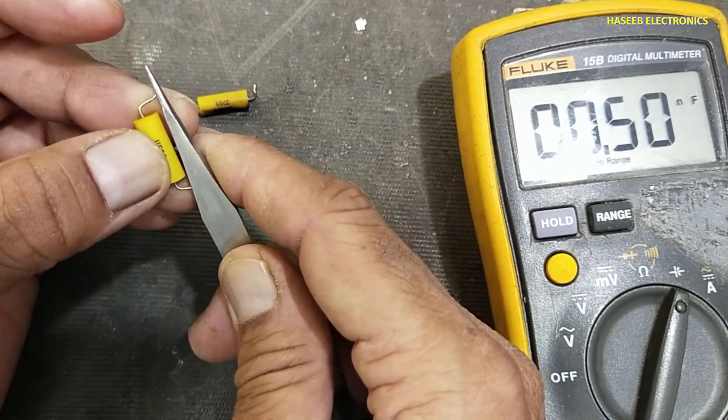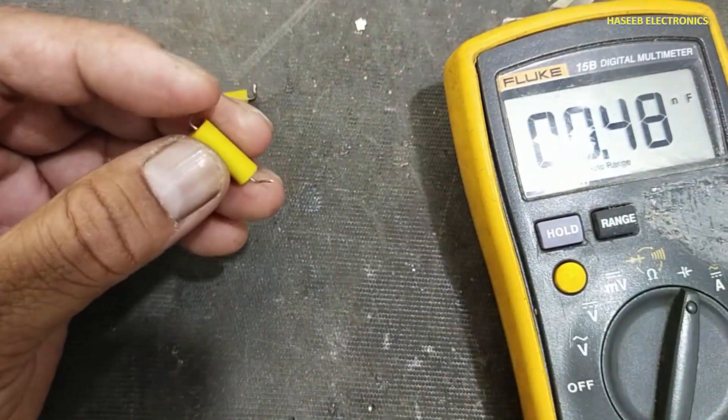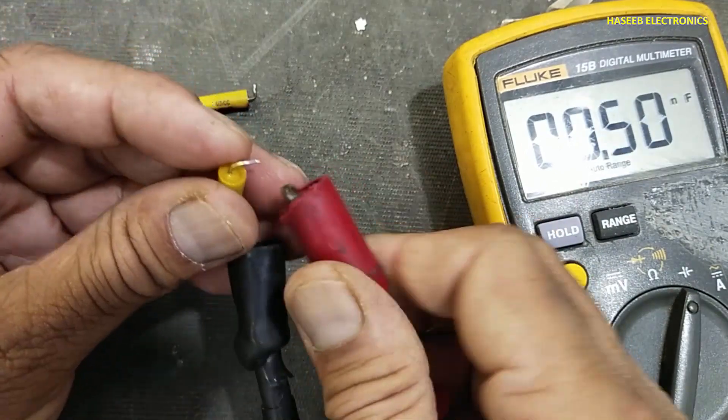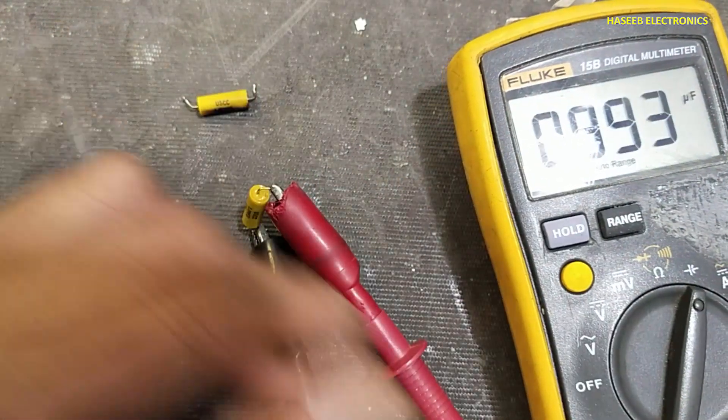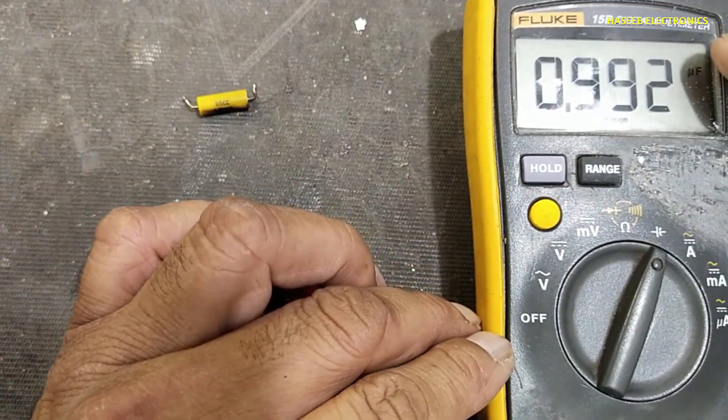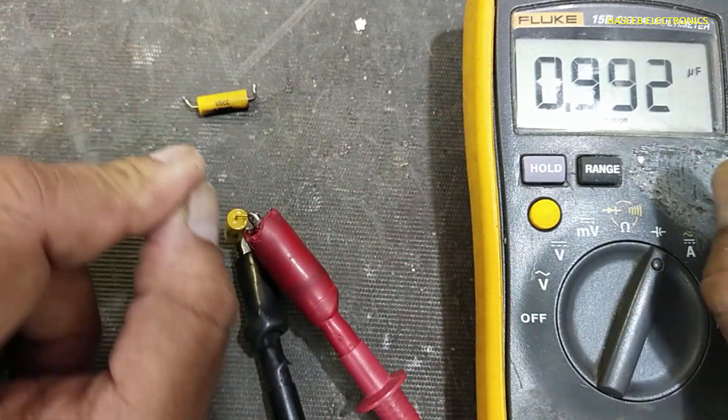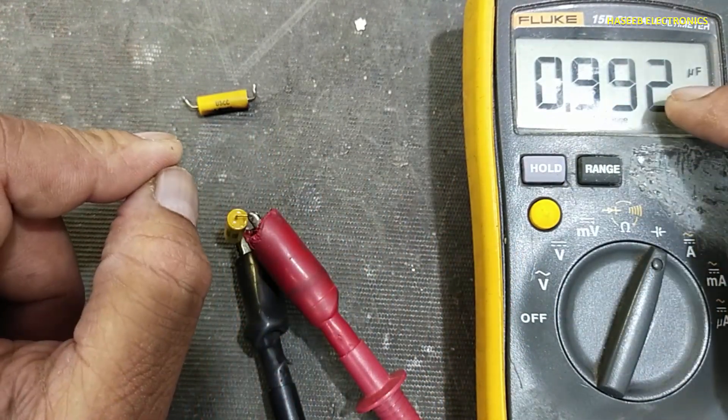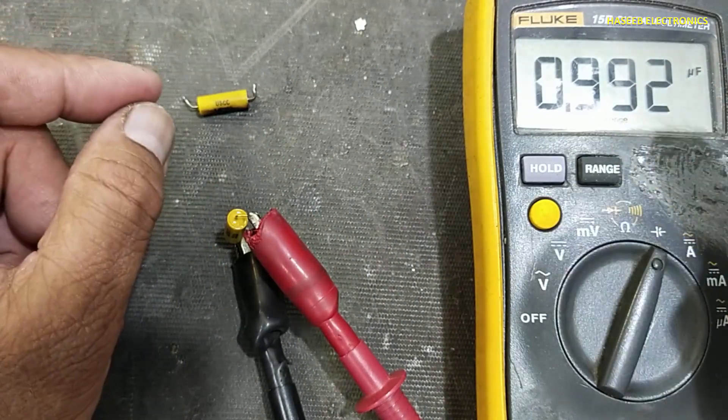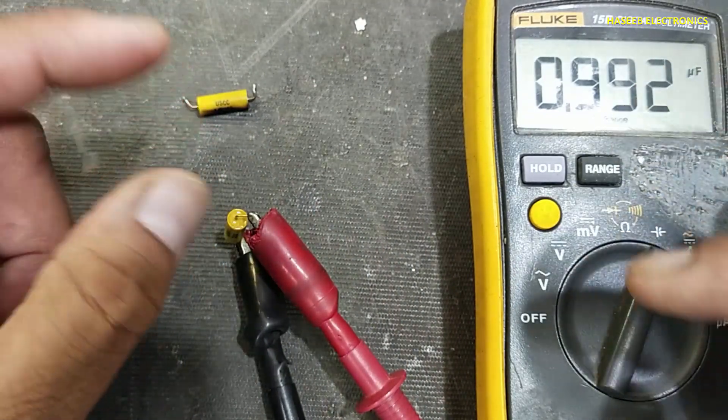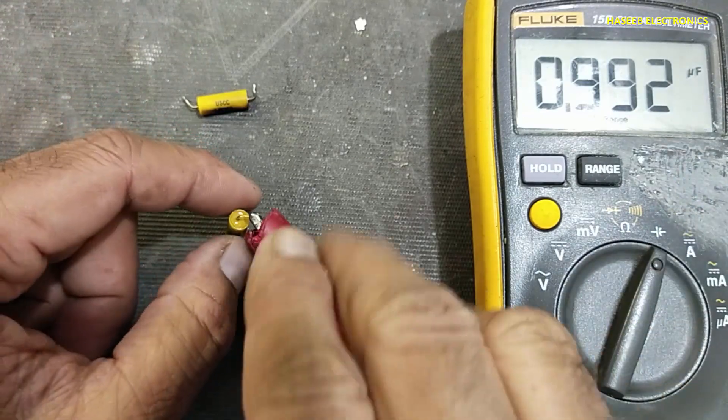Discharge it. 0.992. So this capacitor is within that window, 900 to 1100. 0.99, that is within the tolerance, so this capacitor is good.